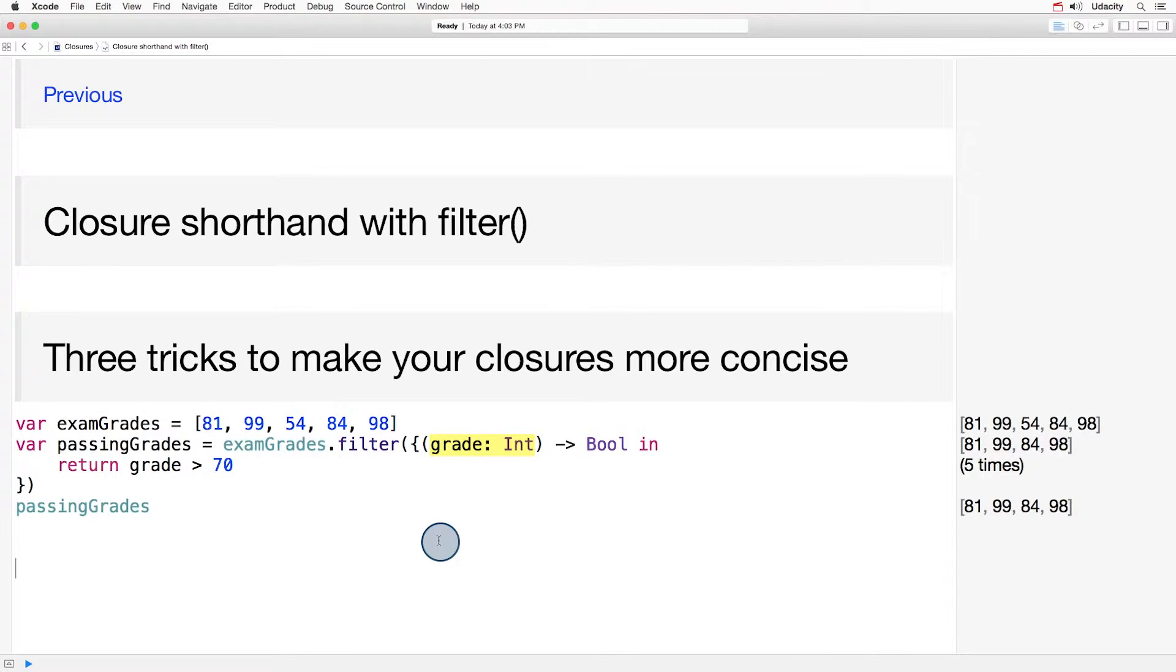The closure takes in a grade, an int, and returns a bool representing whether the condition is true. At this point, this looks a lot like the syntax we saw for sort.